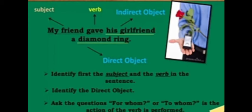Let's see an example: My friend gave his girlfriend a diamond ring. Identify first the subject and the verb. The subject is my friend and gave is the verb. Next, identify the direct object — what did my friend give? A diamond ring. That is the direct object. Now ask: for whom was the action performed? For his girlfriend. So his girlfriend becomes the indirect object — the person receiving the direct object, the diamond ring.